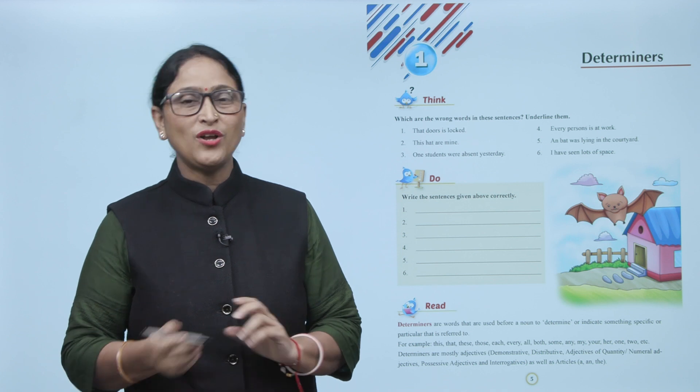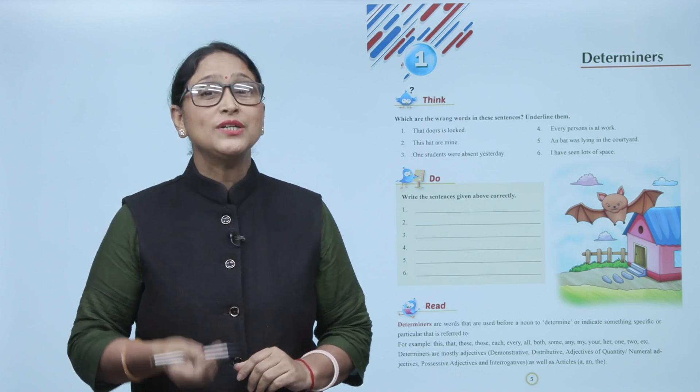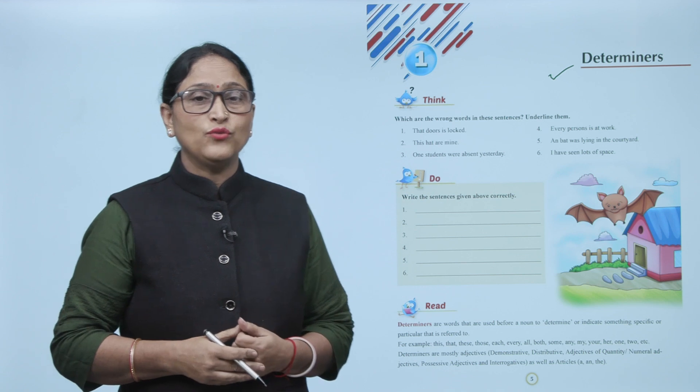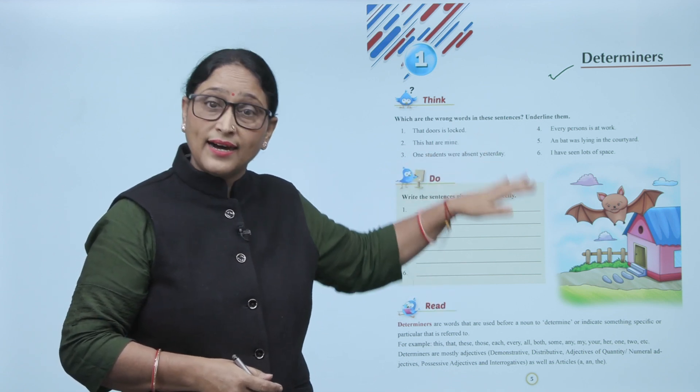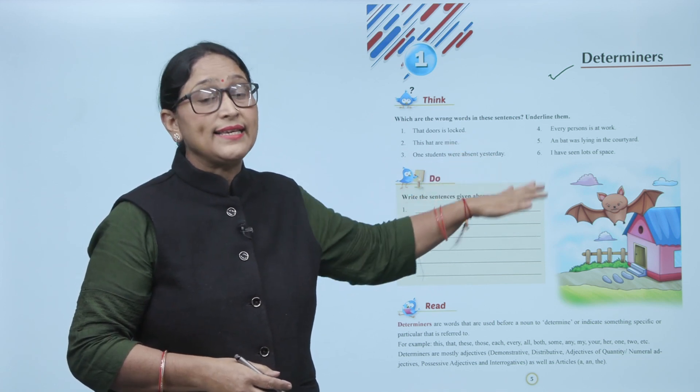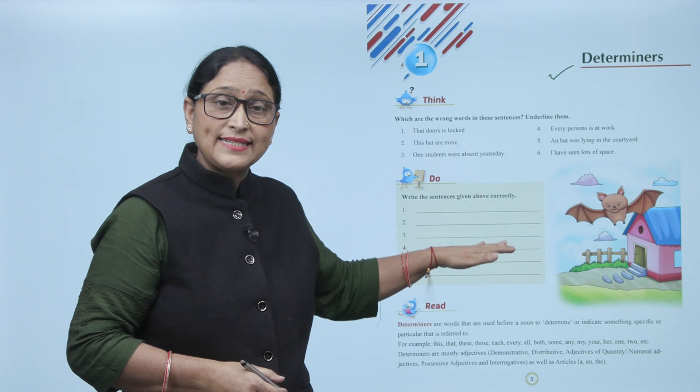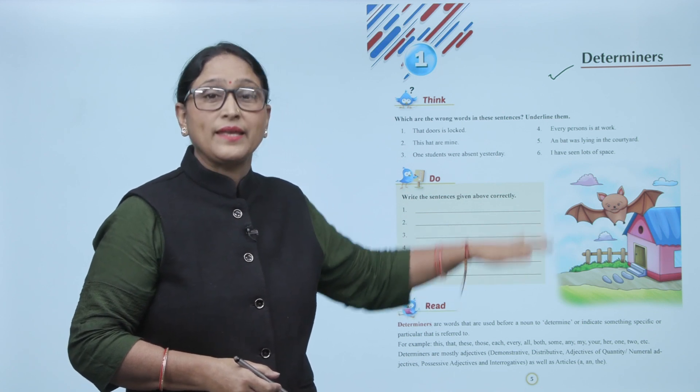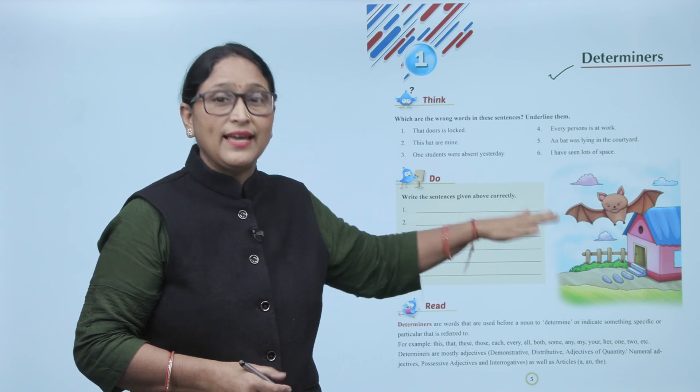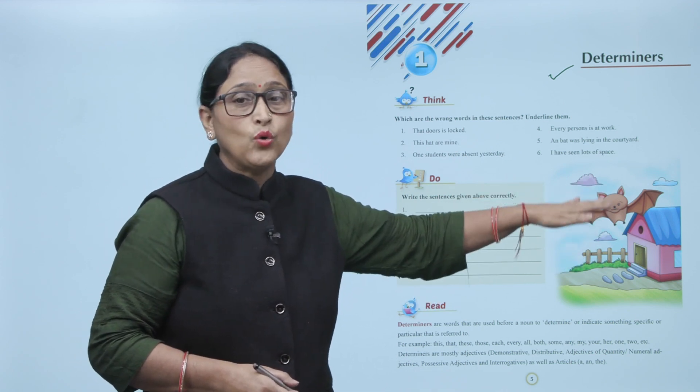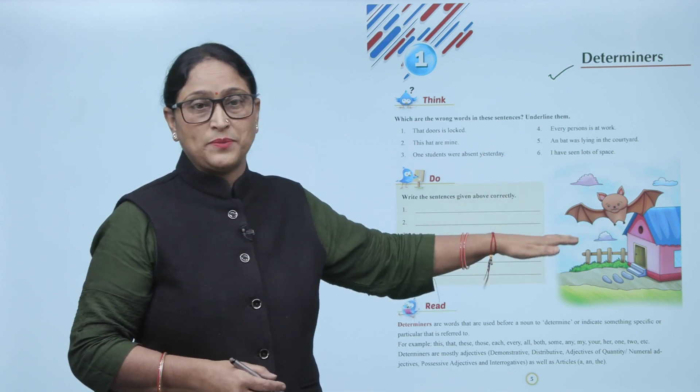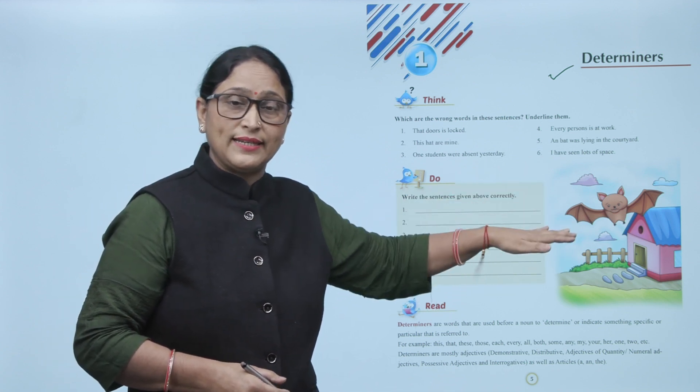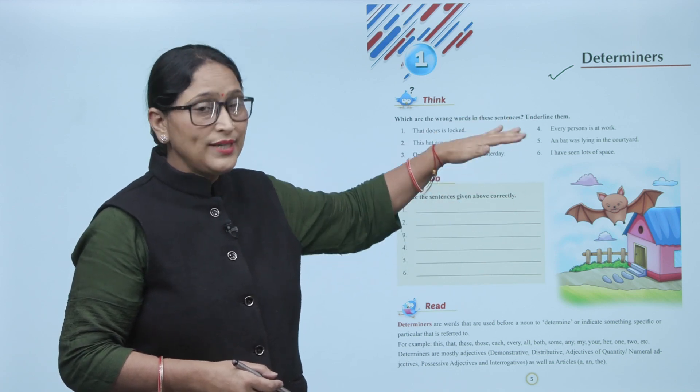Hello children, how are you? I hope you all are doing good. Now we will do determiners. Think, which are the wrong words in these sentences? Underline them. That doors is locked. This hat are mine. One students were absent yesterday. Every persons is at work. And bat was lying in the courtyard. I have seen lots of space.